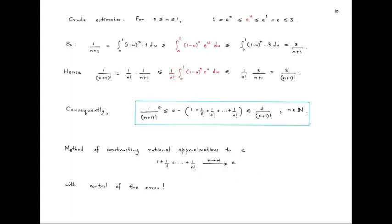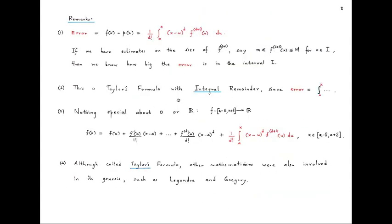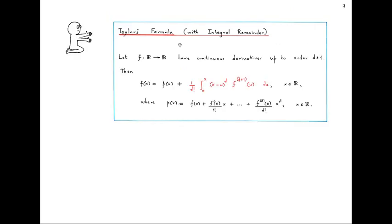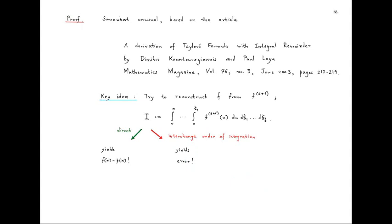So we proved e is irrational using these inequalities, which were in turn obtained using Taylor's formula applied to the exponential function. Now let us look at a proof of Taylor's formula. We will see a somewhat unusual proof based on an article from Mathematics Magazine. The key idea is to reconstruct f from its (d+1)th derivative by looking at a (d+1)-fold multiple integral of f^(d+1), using the fact that by the fundamental theorem of calculus, integration and differentiation are inverse processes. If we do not change the order of integration, this integral yields the smooth function minus its degree-d Taylor polynomial; if we interchange the order of integration, it yields the error given by Taylor's formula.